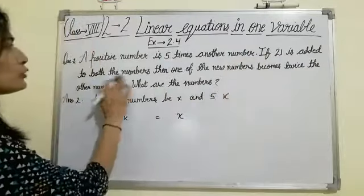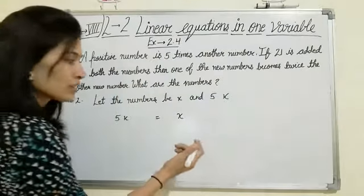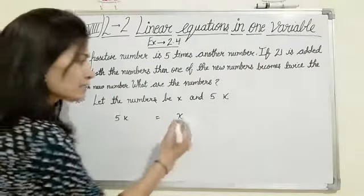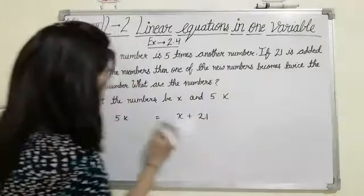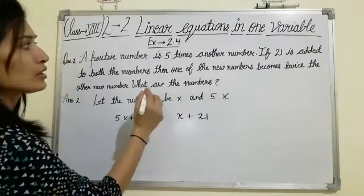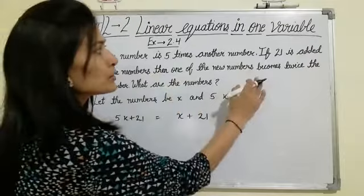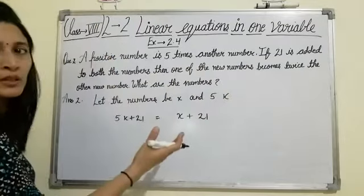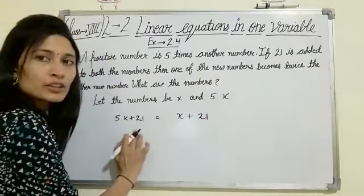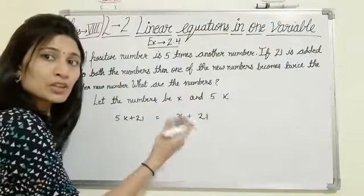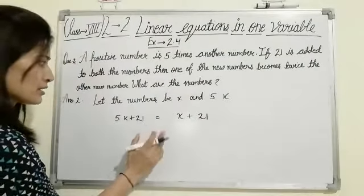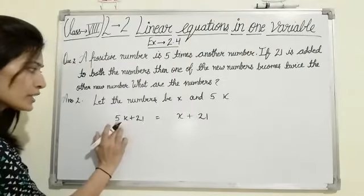If 21 is added to both the numbers, add 21 to both sides. Then one of the new numbers becomes twice the other new number. But which one of these two will be twice the other?